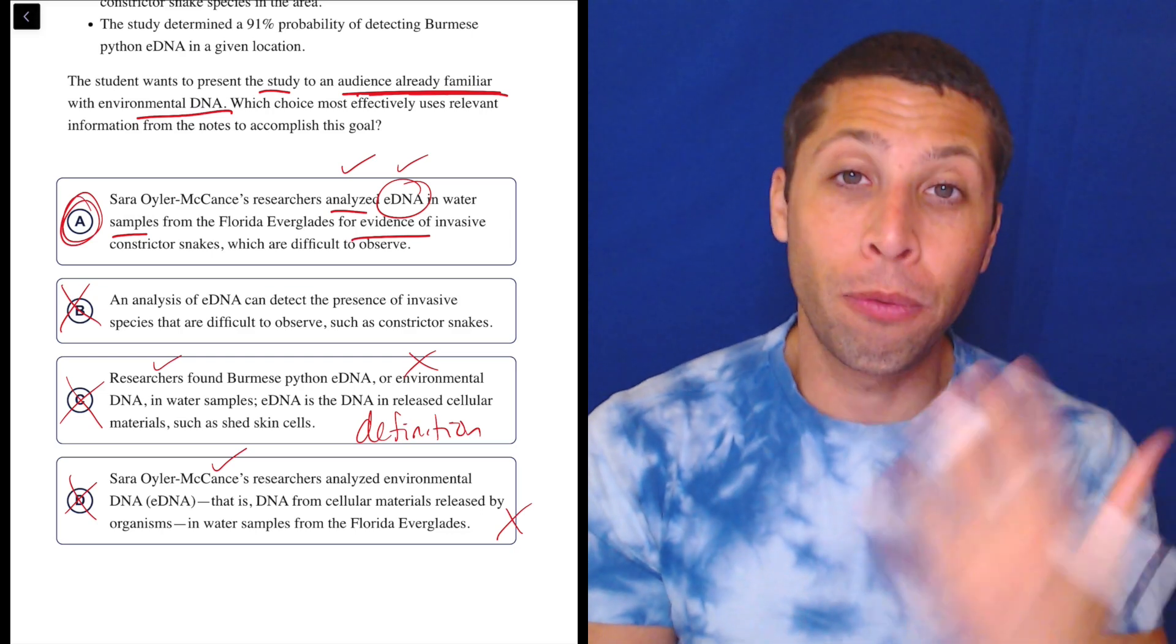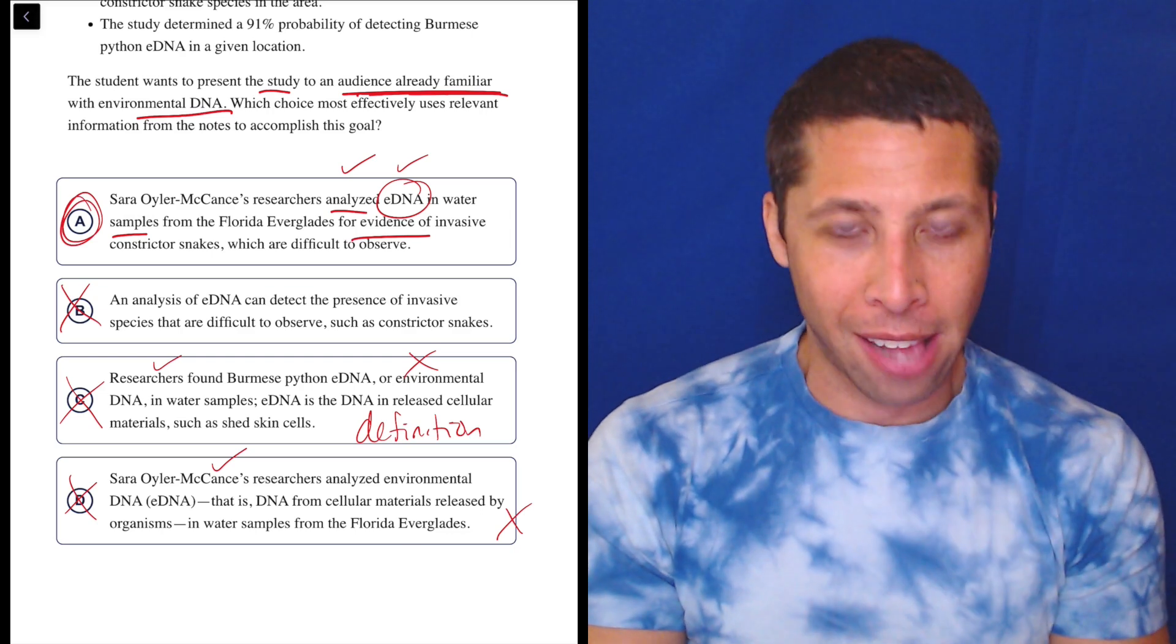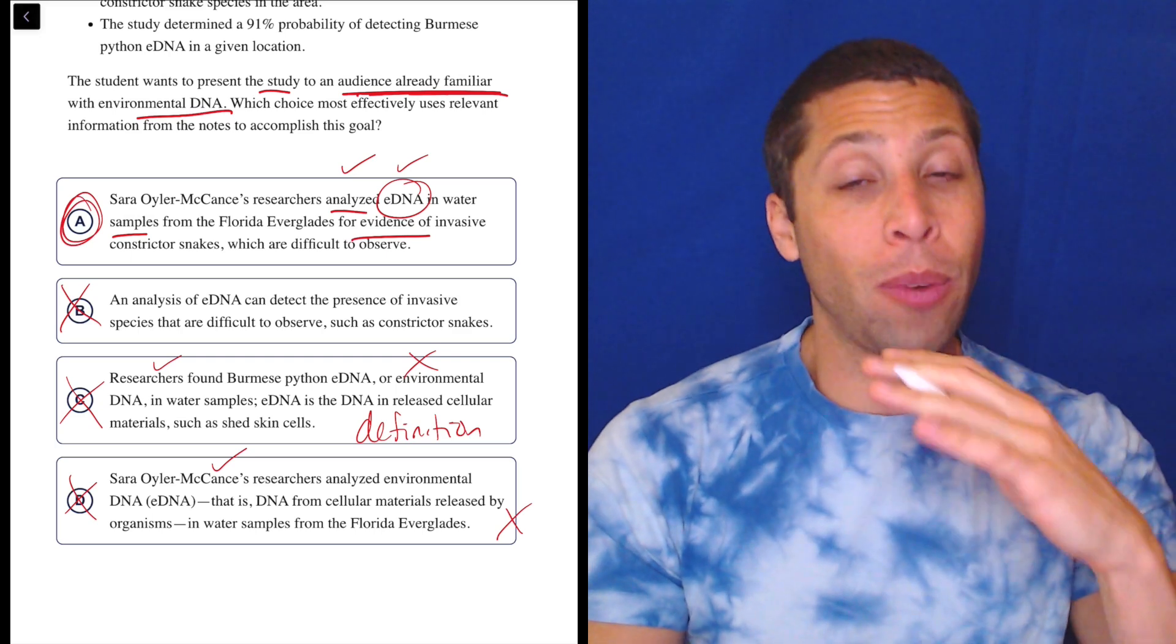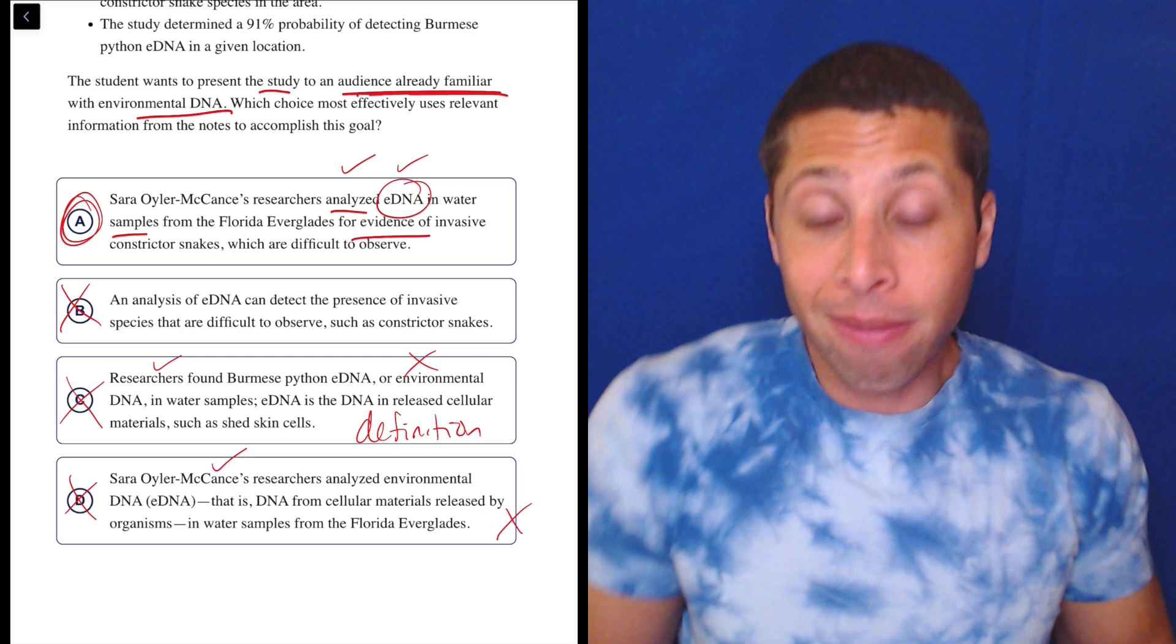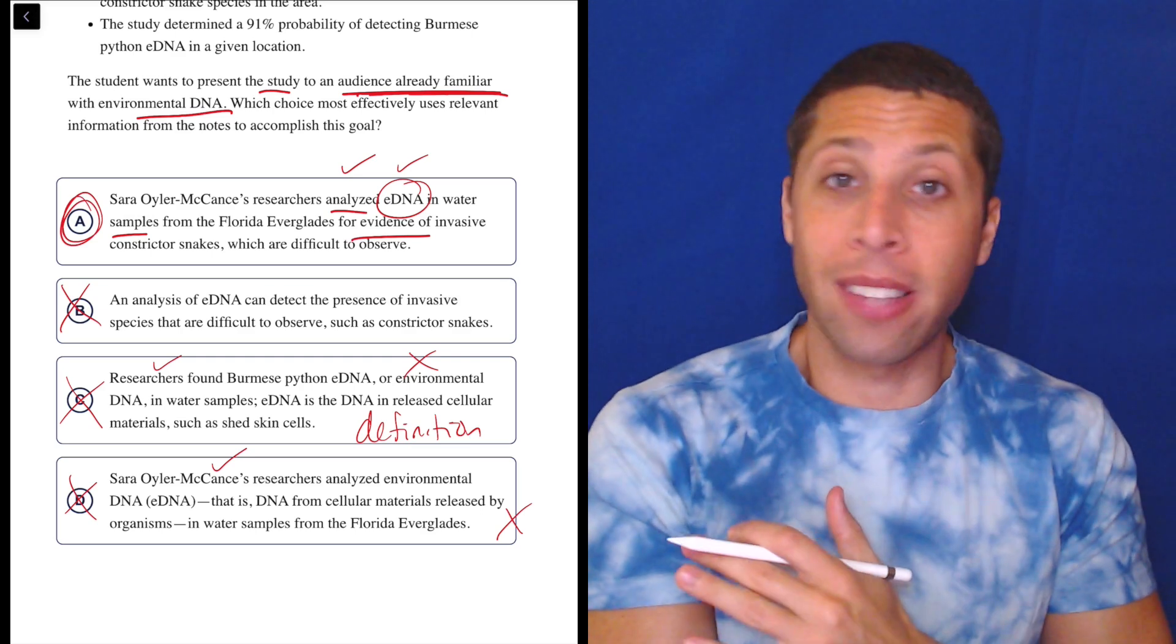So you might think that either C or D is a better summary of the study. You might be like, well, those are more informative. But that wasn't our task. The goal of the question was we have to pretend we already know what it is, so we don't need it defined for us. And that is what A does - it just moves past that word.